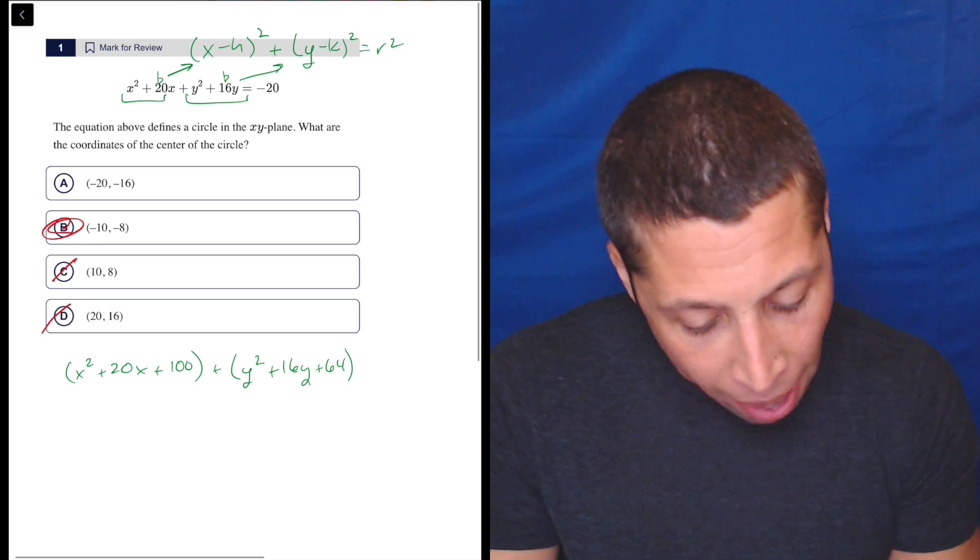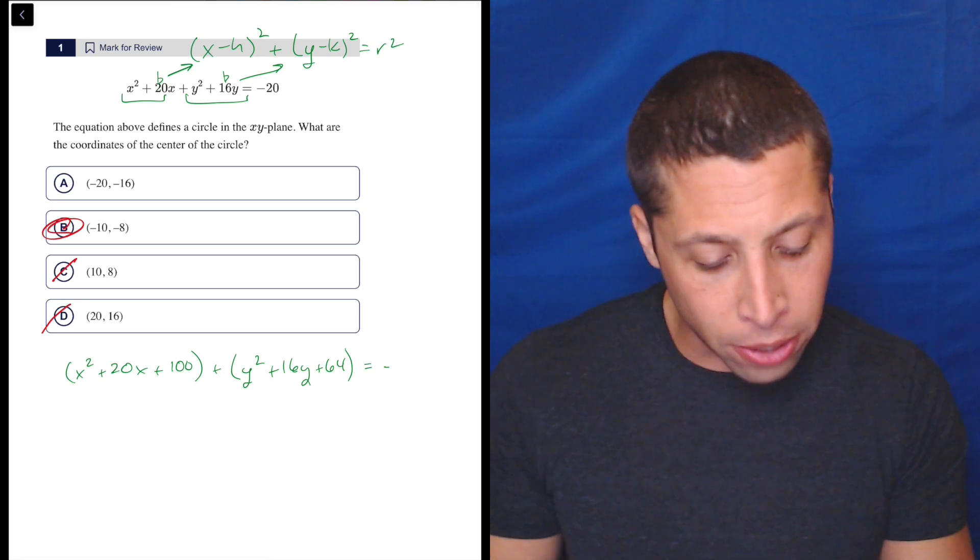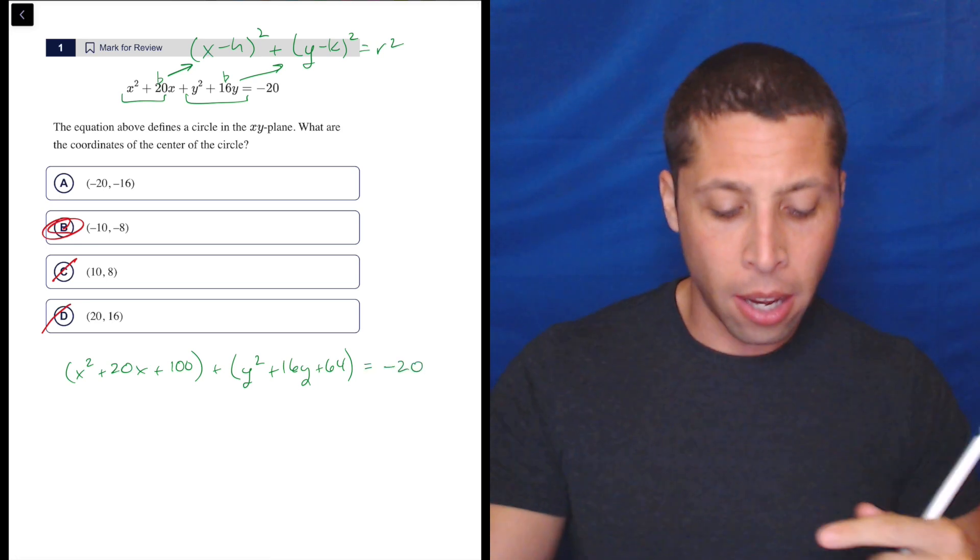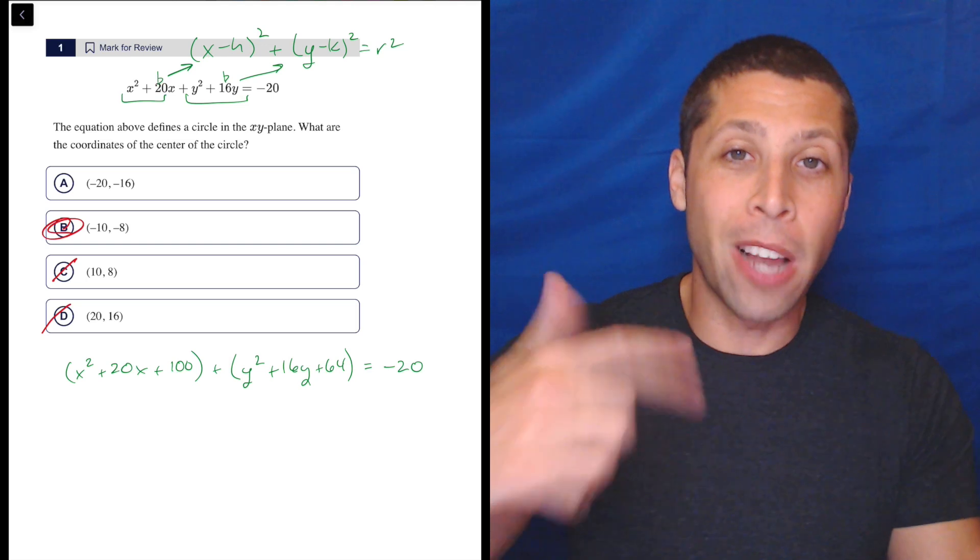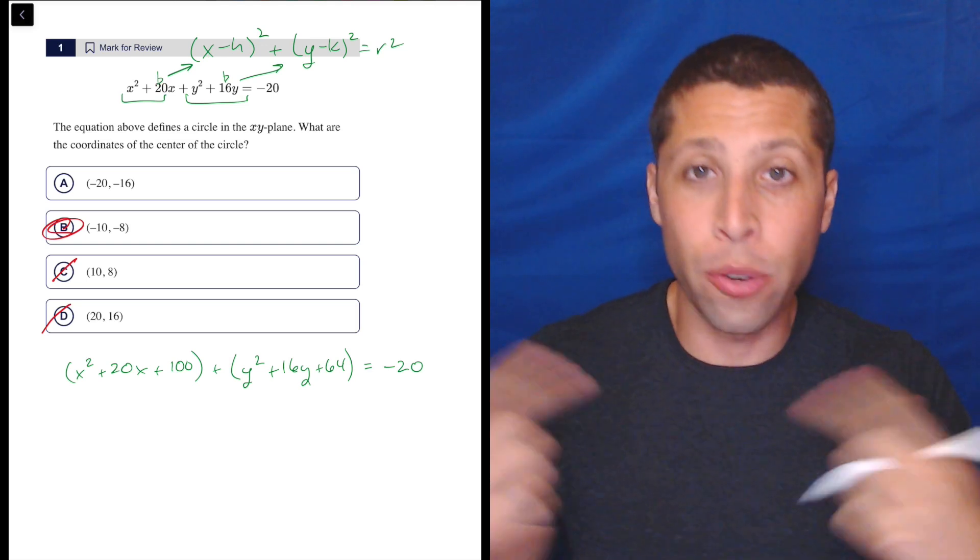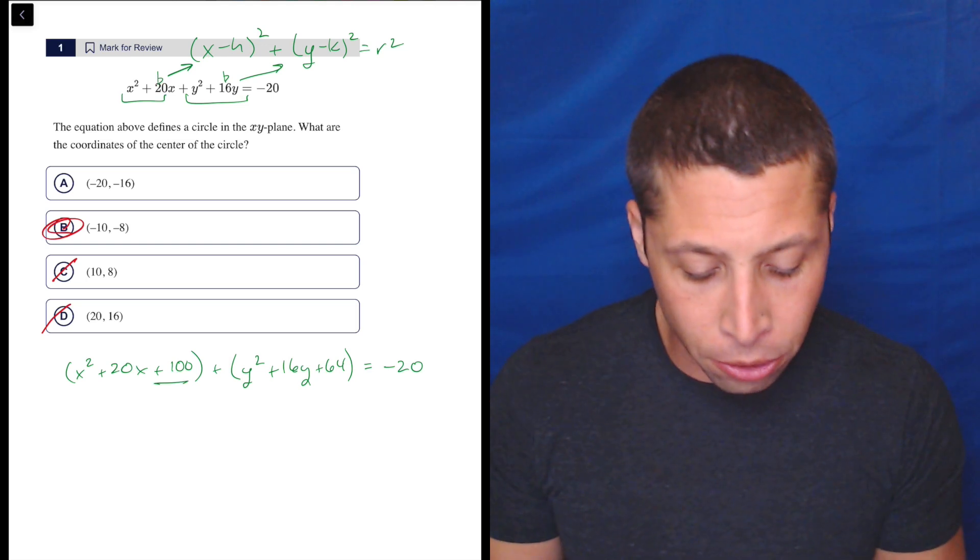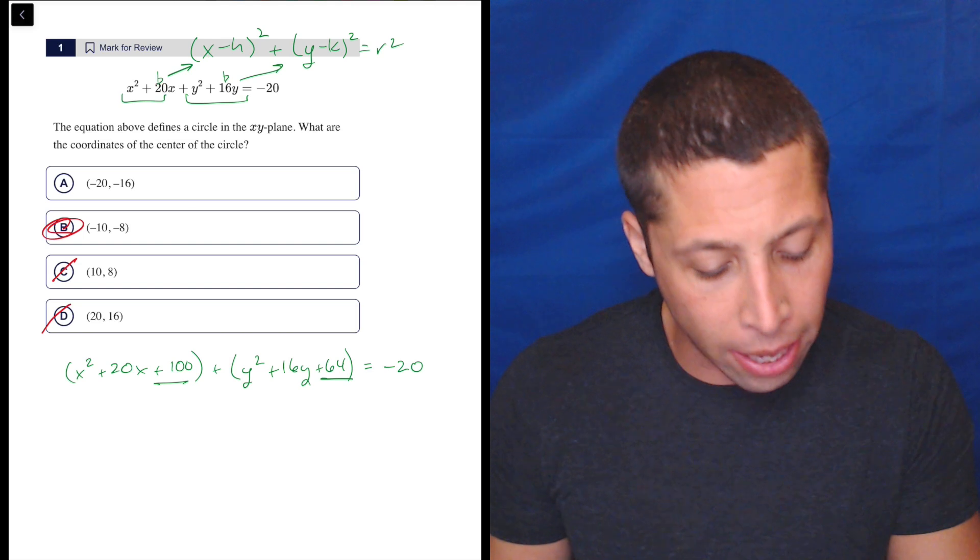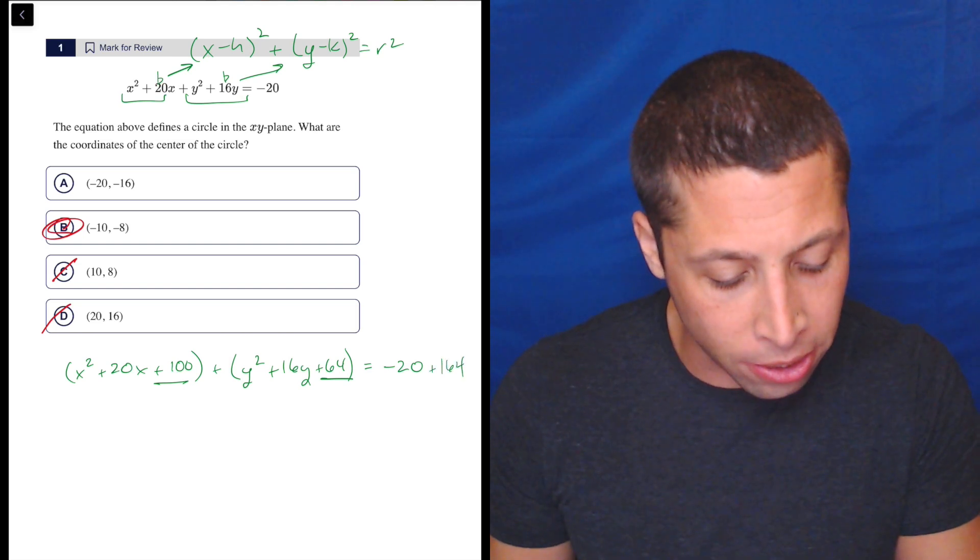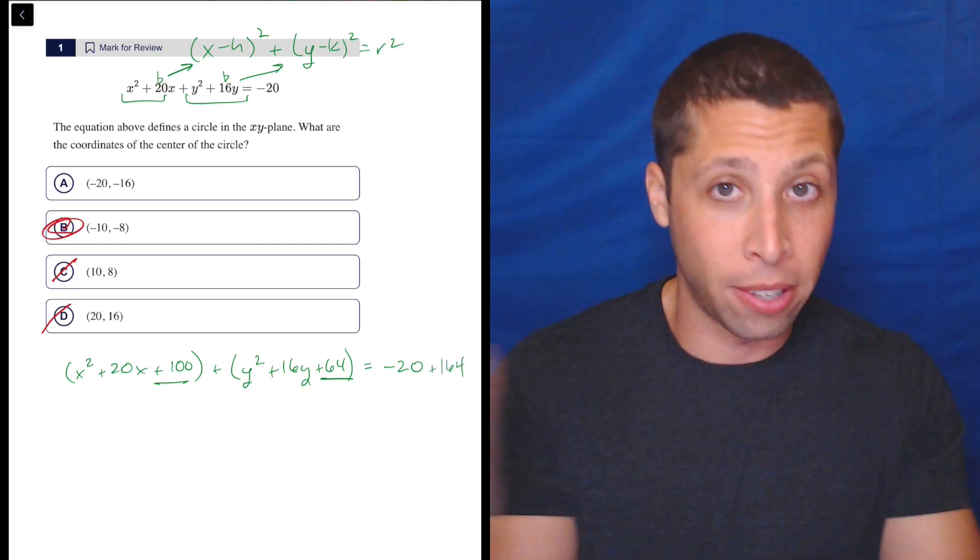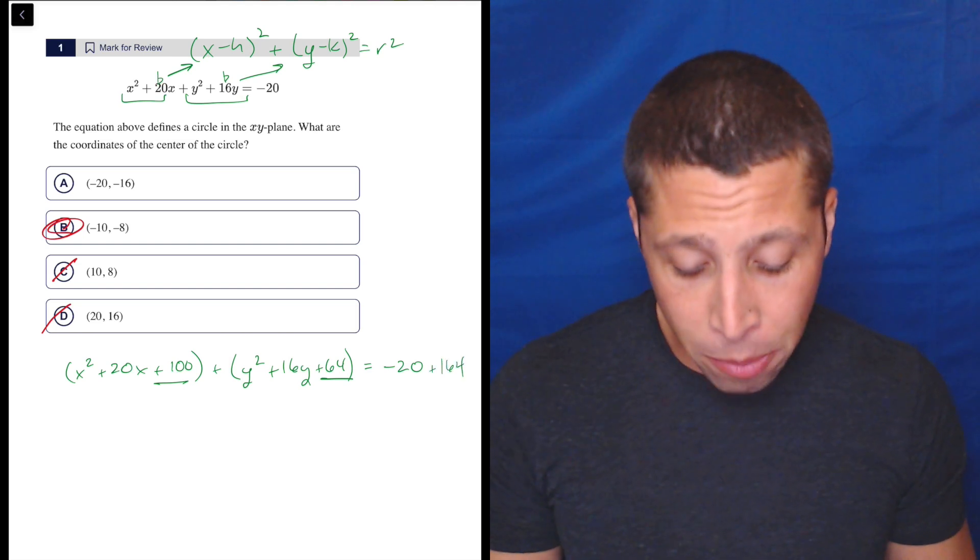Now we have to make sure we balance things out. You're not allowed to just go adding other numbers to one side of an equation. You have to balance things out. So we added 100 on the left and 64 on the left. So we have to add 164 on the right as well, right? Add both of them together.